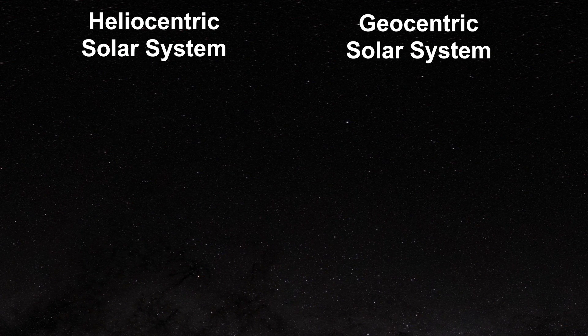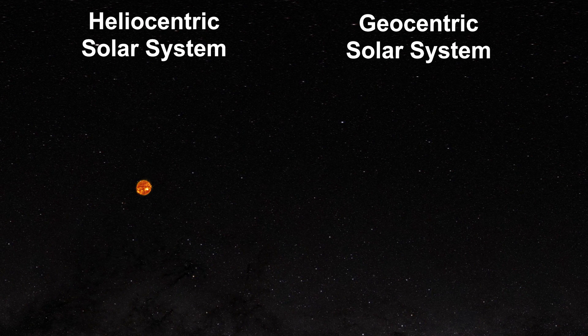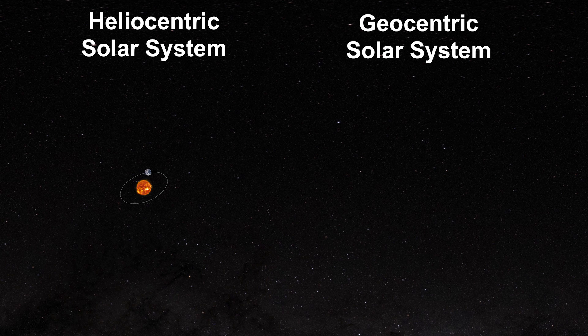The heliocentric model positioned the sun at the center of the solar system. This resulted in planetary motions which could follow simple ellipses.